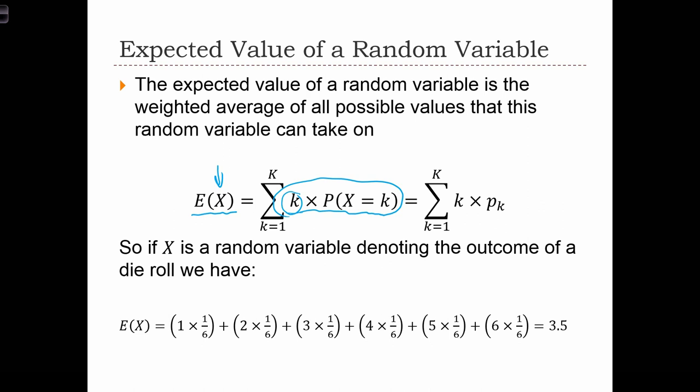It's going to be convenient to define this notation. The probability of K is the same thing as the probability that the random variable equals K. So the expected value is the sum over all possible K's of K times P sub K.